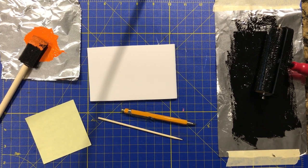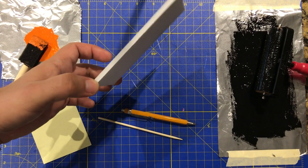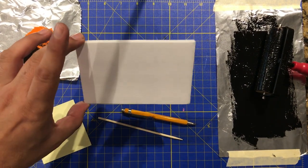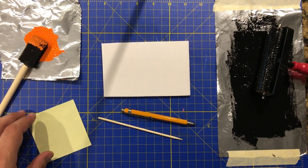We're going to make a styrofoam print. To do this we need a piece of styrofoam. This is from the dollar store. Cut it down to a small little square or rectangular shape.